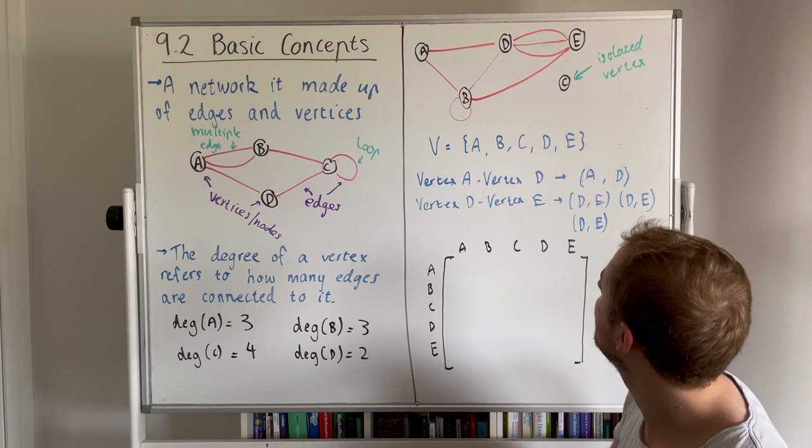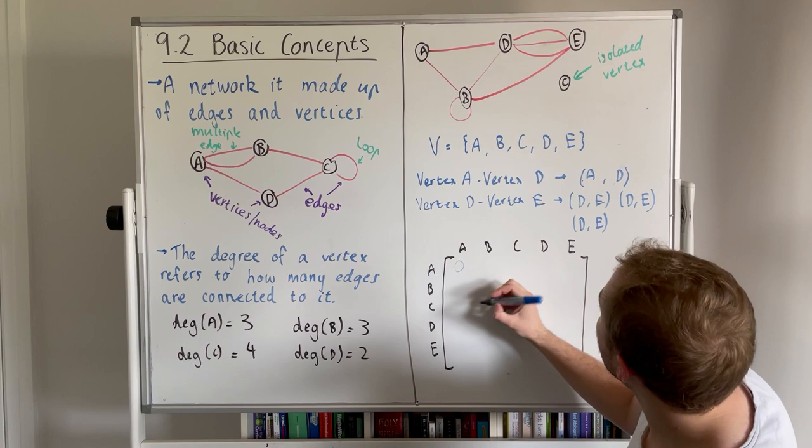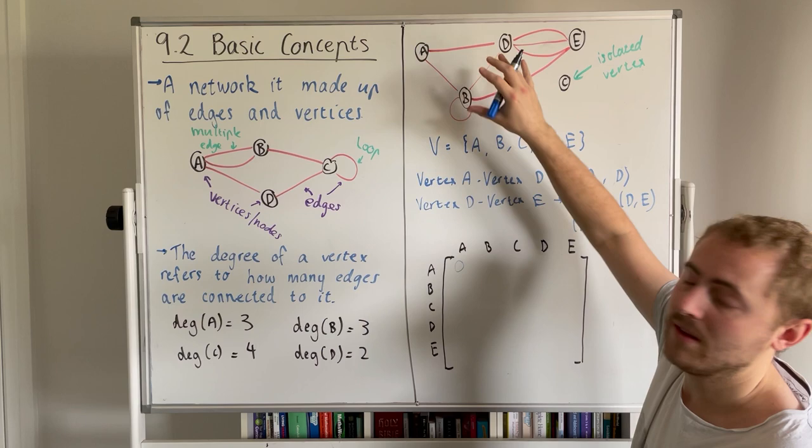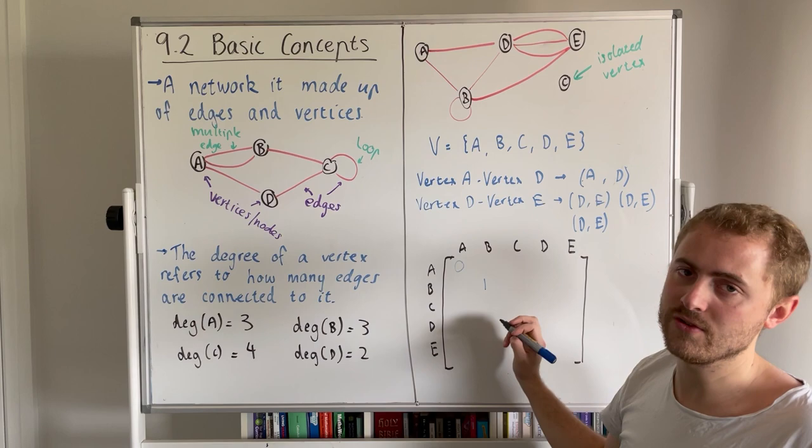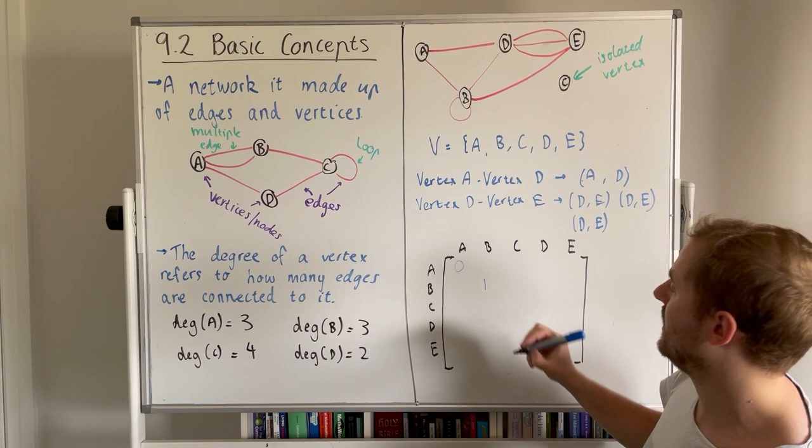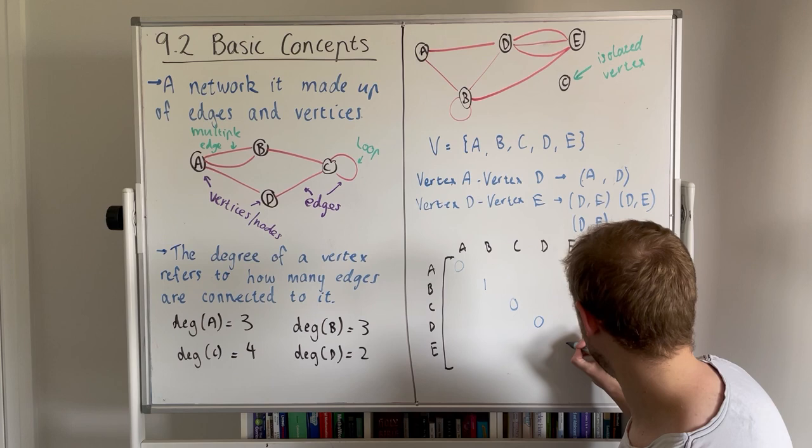So from A to A, zero. I'll start with the diagonal. B to B, now we do have a connection from B to B. When we're doing this in a matrix form, when we have a loop, it only counts as one inside the adjacency matrix, all right? So don't count as two. It does count as two degrees, but when we put them in a matrix it only contributes one. There's no other loops. So C to C, D to D, E to E.